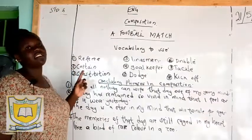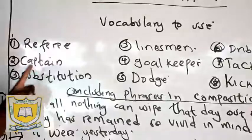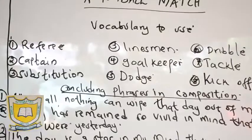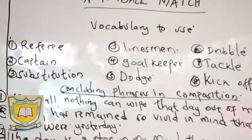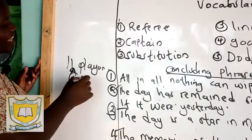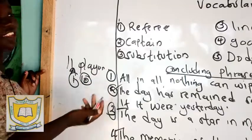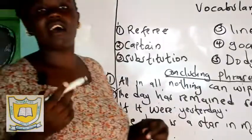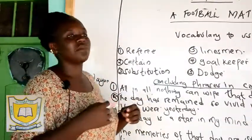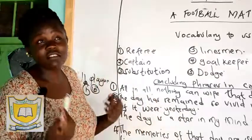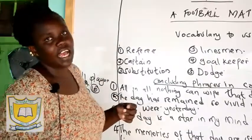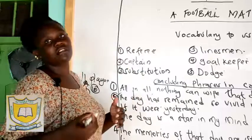Number two is the captain — a player in charge of the other players. A football match has 11 players, so you have one player in charge of the other 10. You can say: 'Our captain, who was as fit as a fiddle, passed the ball to me and in turn I sent it flying into the goalpost of the opponent team.' A referee is the person who mans the match and is in charge of it as it goes on.